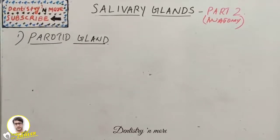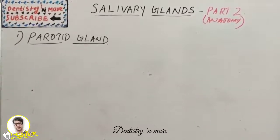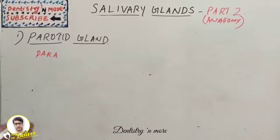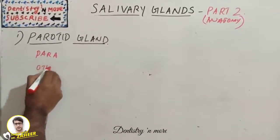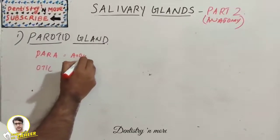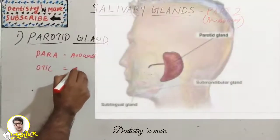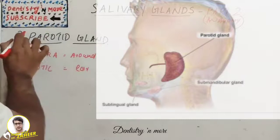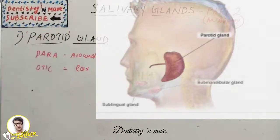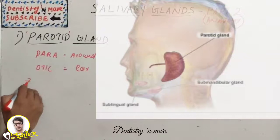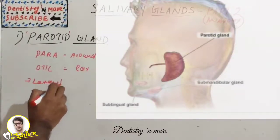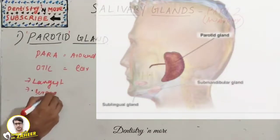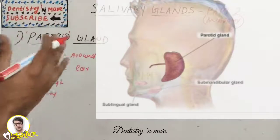The parotid gland got its name from two words: 'para' and 'otic.' 'Para' means around and 'otic' means ear, so it is a gland present around the ear. The parotid gland is the largest salivary gland and it is purely serous in nature.